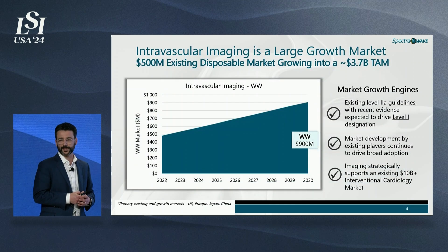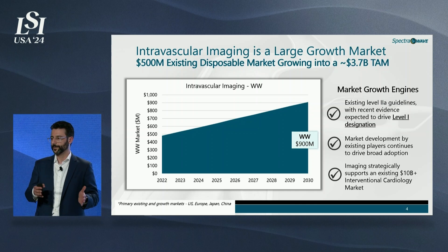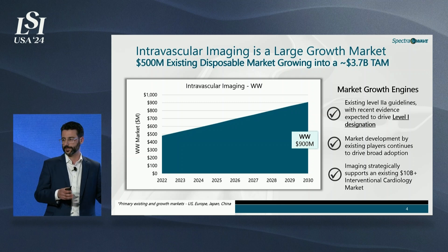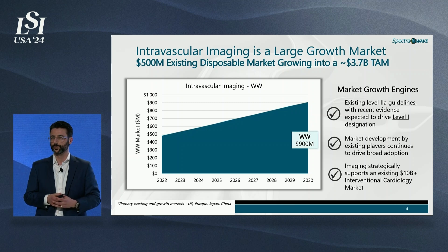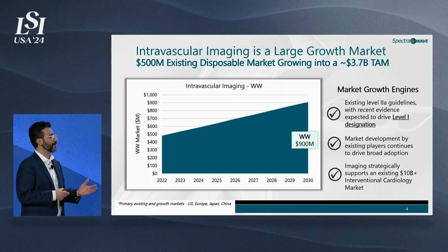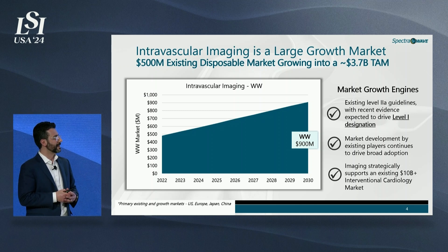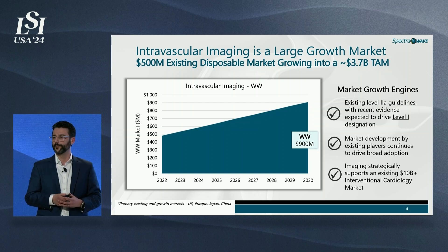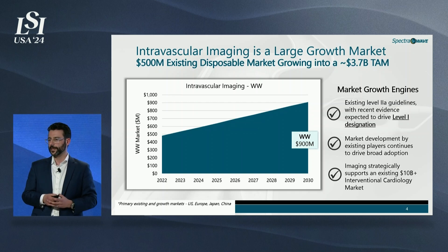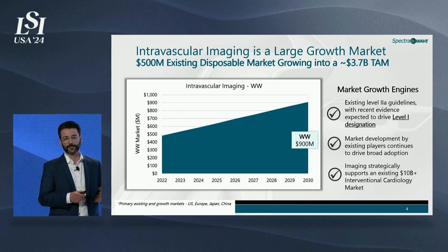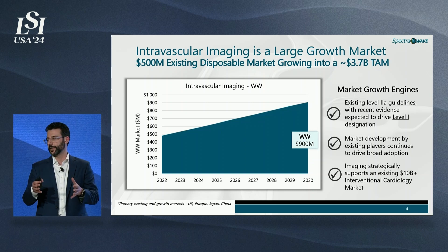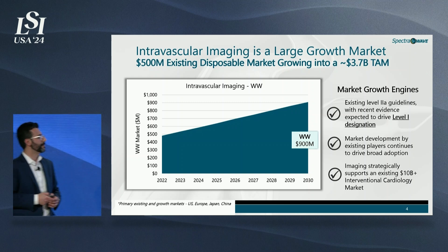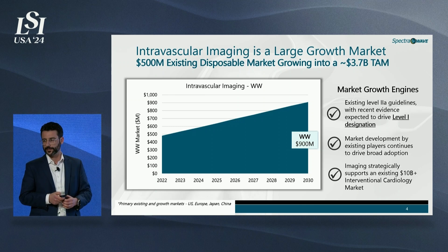This level of evidence has driven significant field growth over the last five to ten years, with intravascular imaging now used in over 20 percent of PCI procedures in the U.S. The category is strategically important for portfolio sales — large medical device companies anchor their stent, balloon, and guide catheter sales around intravascular imaging products, supporting a $10 billion-plus market worldwide.